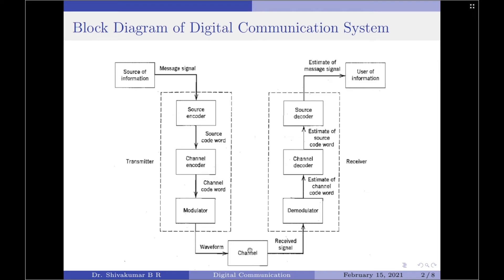Lastly, we come to the channel. Communicating data from one location to another requires some form of pathway or medium. These pathways are called communication channels. A channel provides electrical connection between the source and the destination. A large number of channels are available in current technology such as pair of wires, coaxial cables, optical fibers, radio channel, satellite channel, or a combination of any of these.